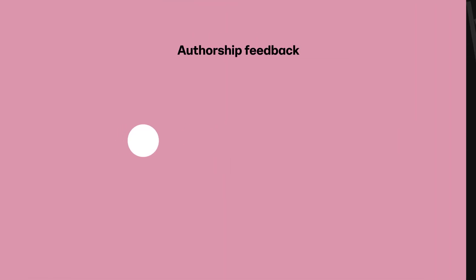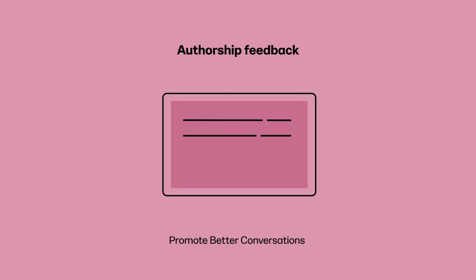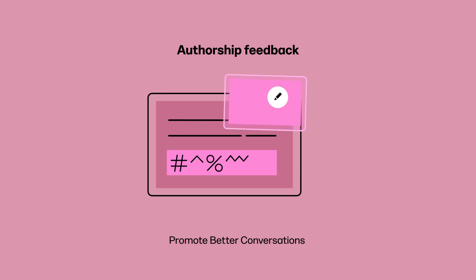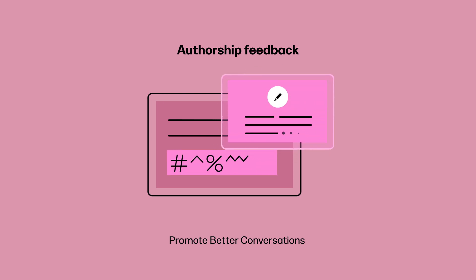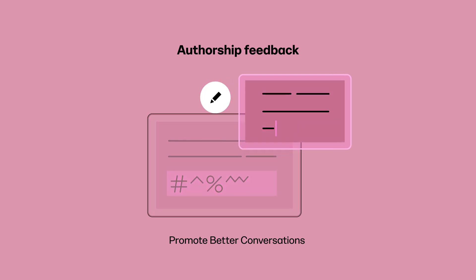Authorship Feedback leverages Perspective API, a tool that uses artificial intelligence to detect toxic language, to provide real-time feedback when a written comment might be perceived as offensive. This gives the individual a chance to reconsider before publishing it online.